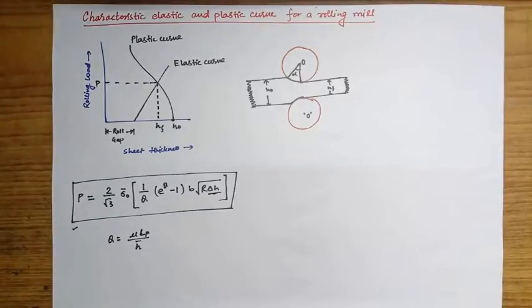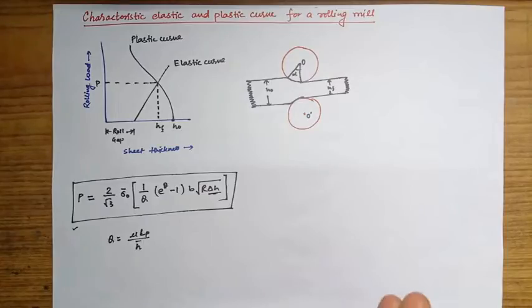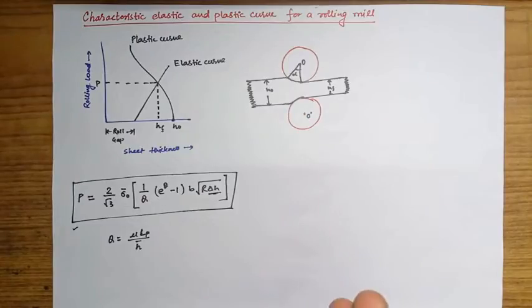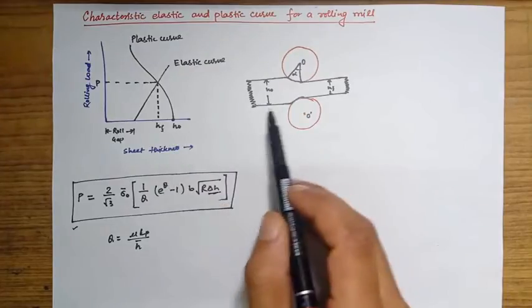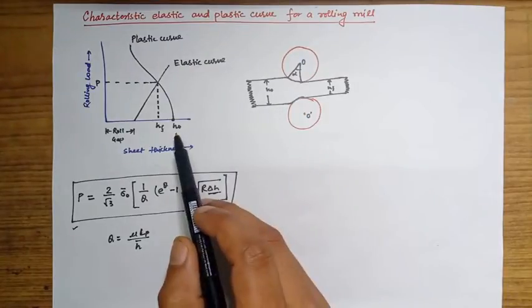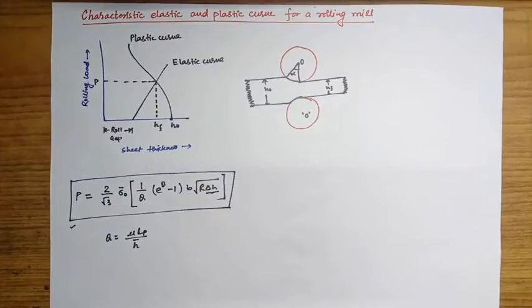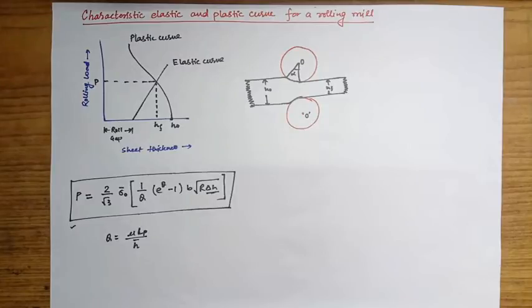Hello everyone, welcome to our channel. Today we will see the characteristic elastic and plastic curve for a rolling mill. This curve basically tells you about what is the roll gap which we need to put so that we will get a final thickness of HF, if the initial thickness of the sheet or plate is H naught. It basically gives the roll gap we need, considering the elastic deformation of the rollers and the plastic deformation of the material — that is, the sheet.